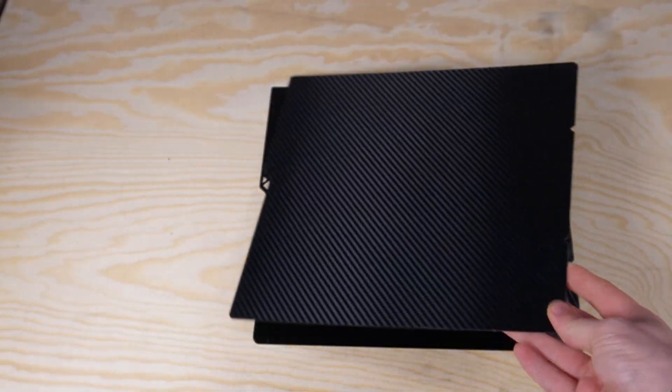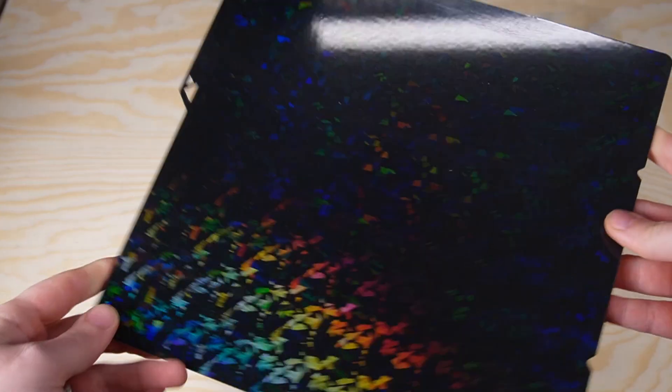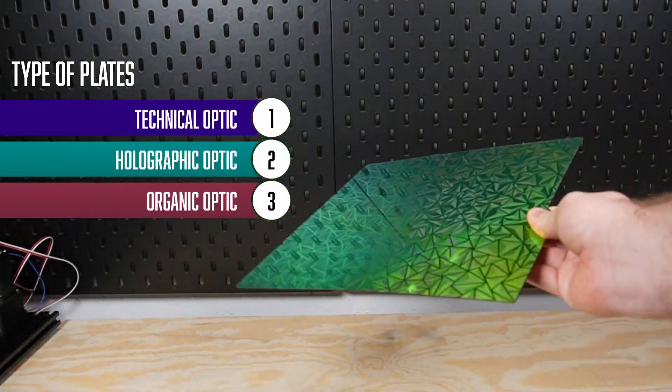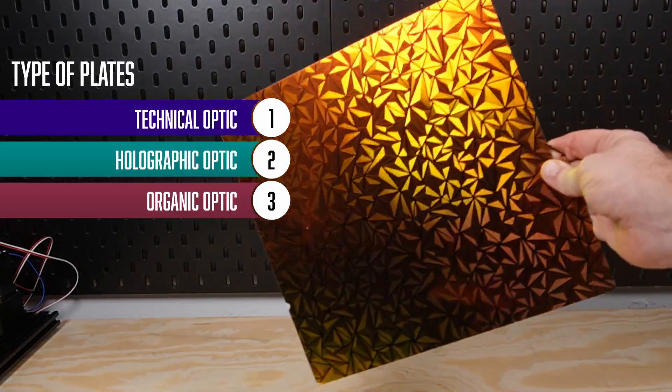Alright, let's get to the plates. To help you decide which one is right for you, we've broken down our test candidates into three style categories: the technical and geometric, the holographic and shimmering, and the organic and flowing.